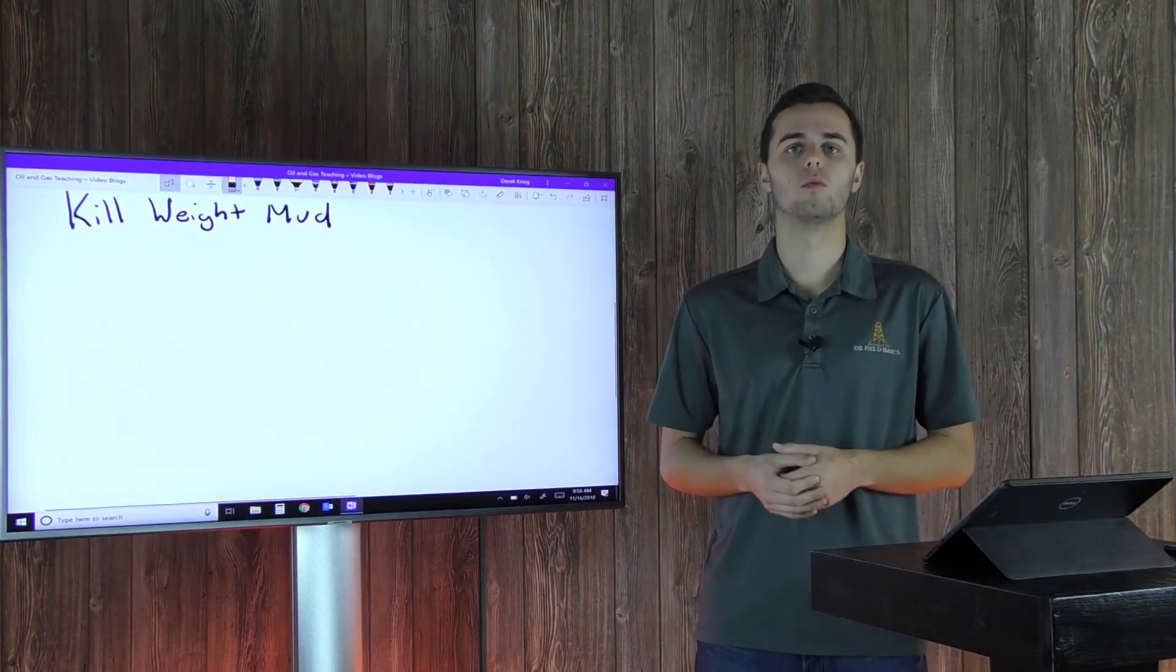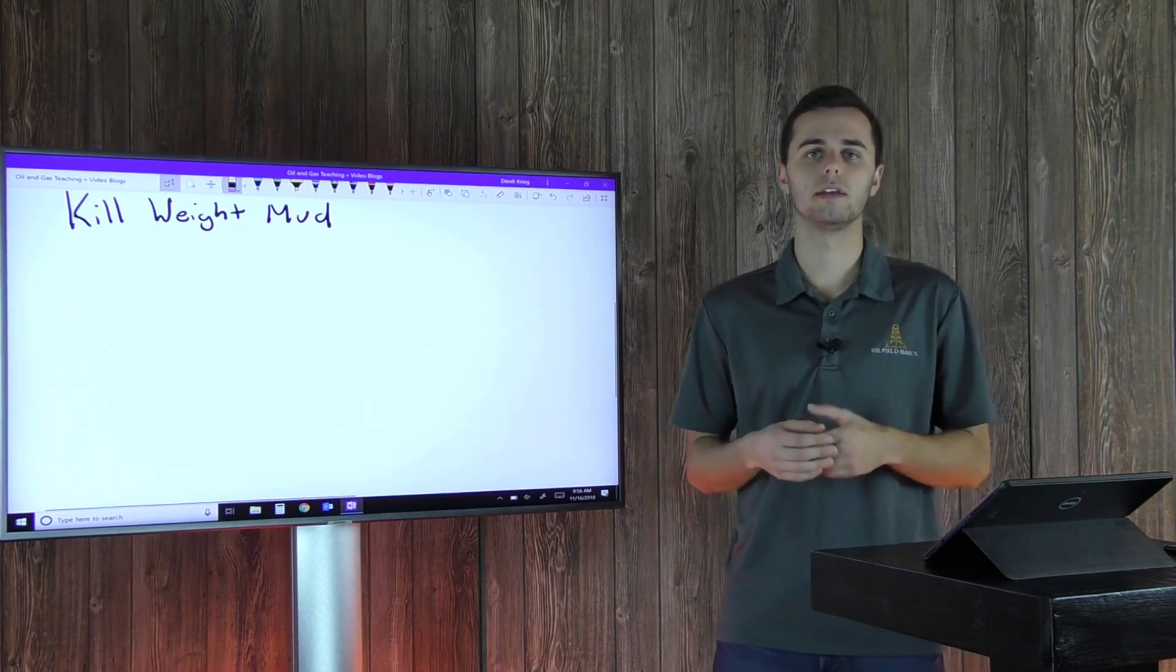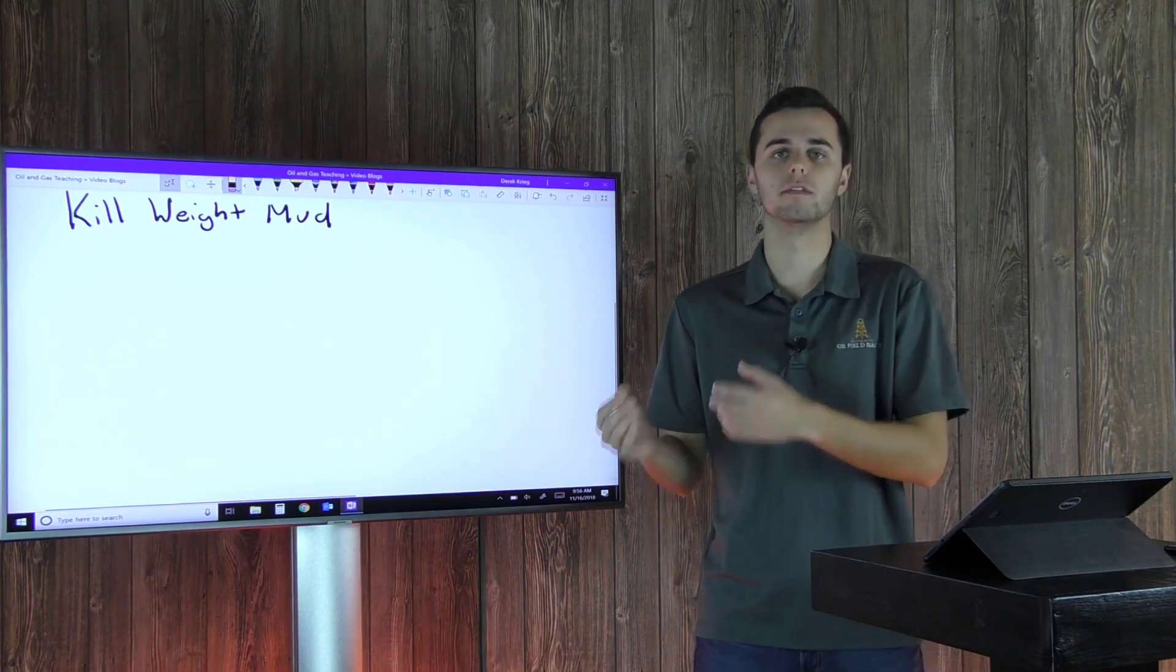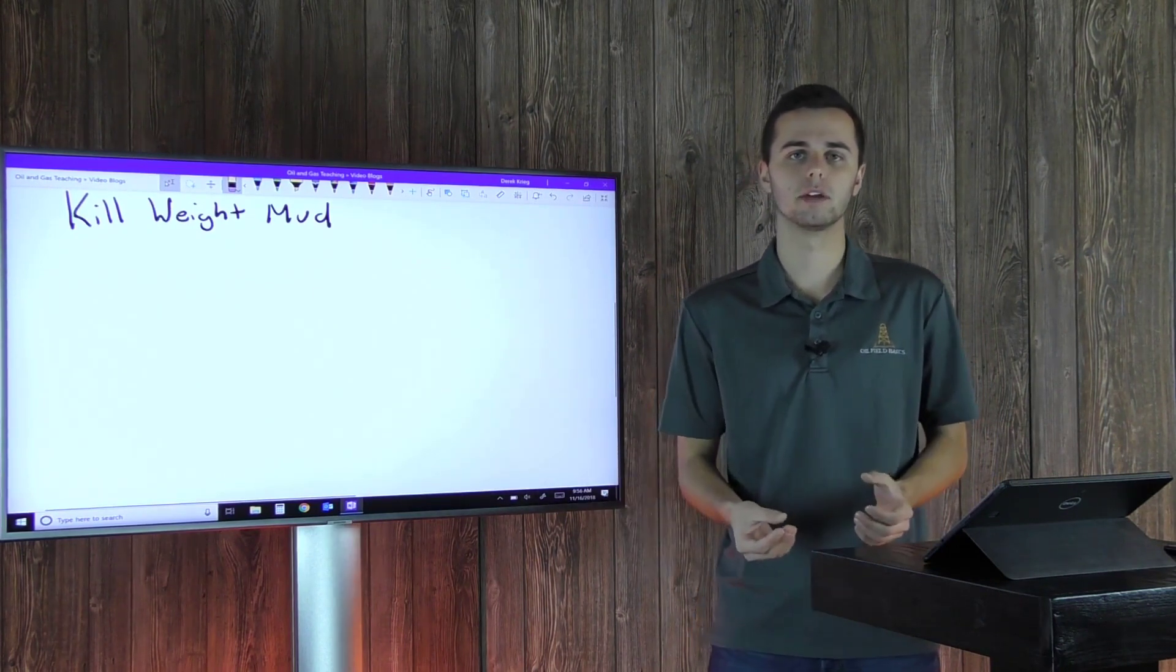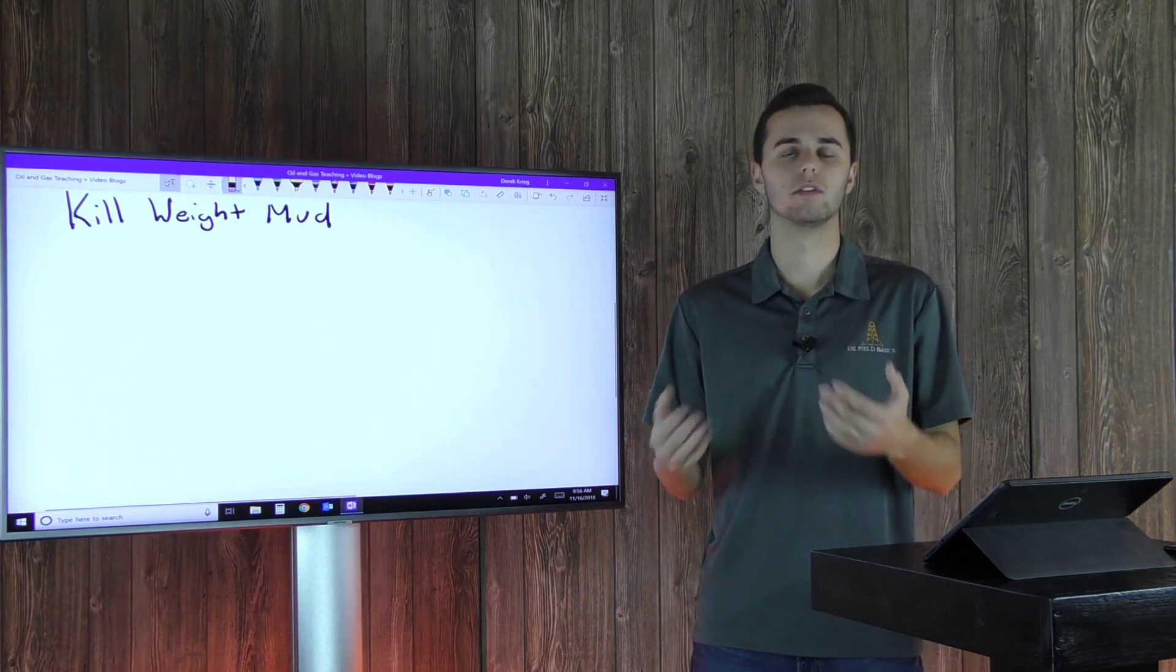So what is your Kill Weight Mud and why is the equation so important? Well, your Kill Weight Mud is a mud with a density high enough to produce a hydrostatic pressure at the point of influx or where your kick is coming into your wellbore that will be sufficient enough to shut in the well and basically kill the well.